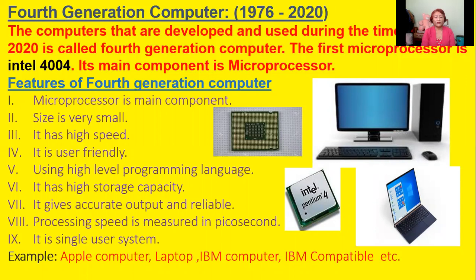Now you see here the features of 4th generation computers. The first feature is that the main component is microprocessor. Number 2, size is very small — the size of 4th generation computers is very small. Number 3, it has high speed — its speed is very fast. Number 4, it is user friendly because it is easy to use.